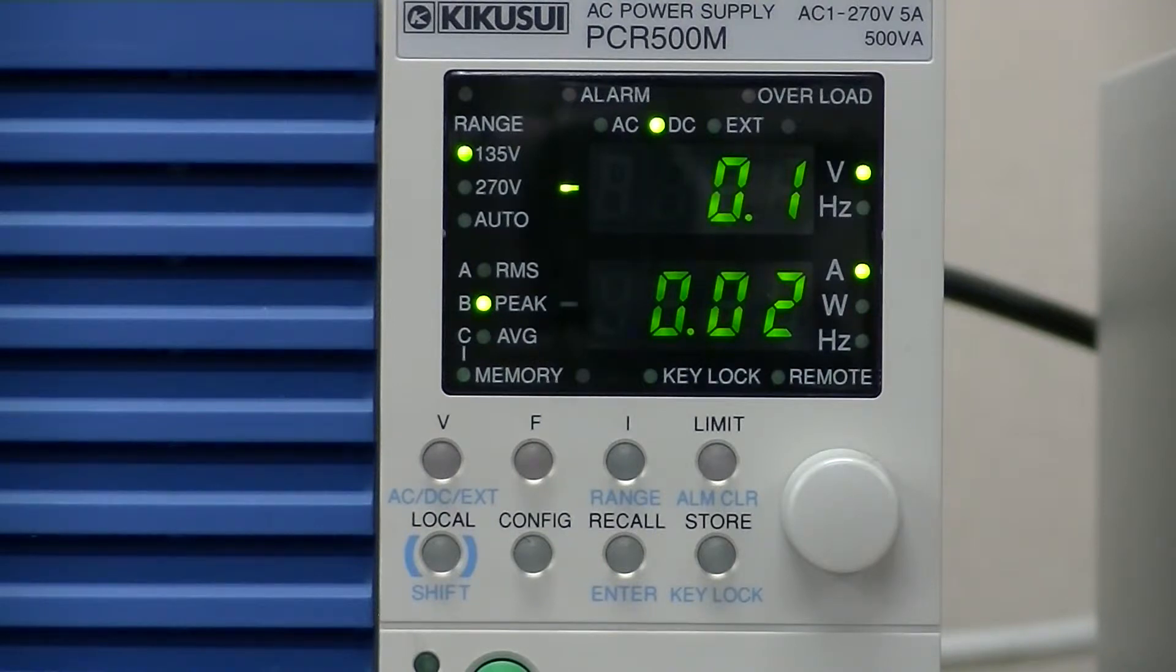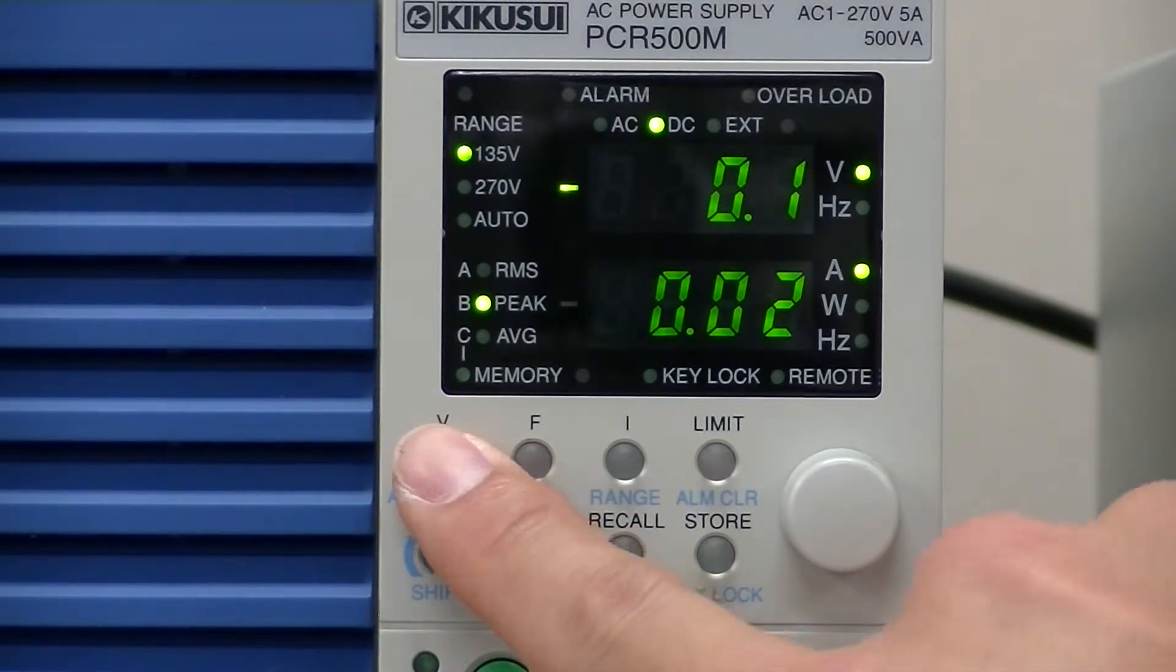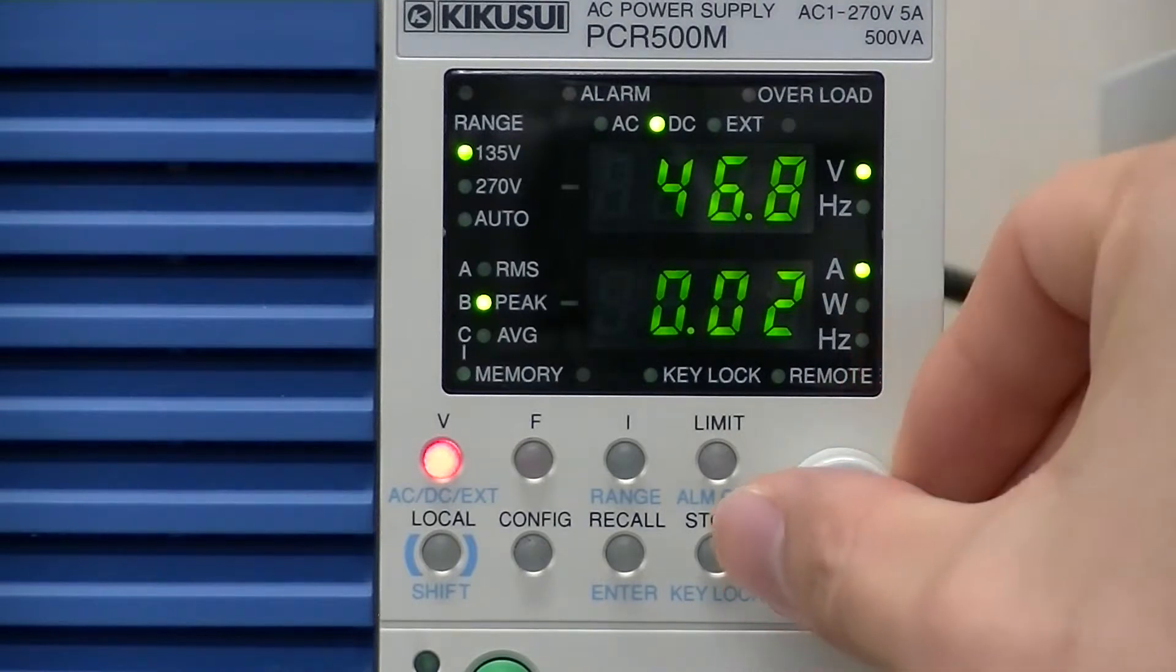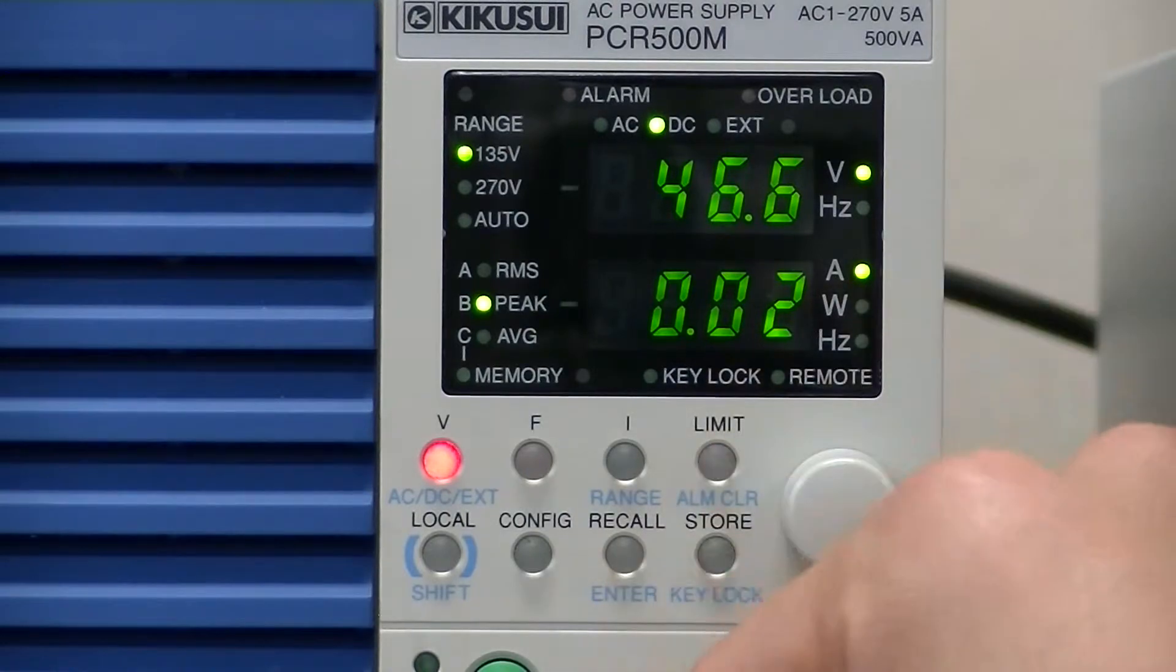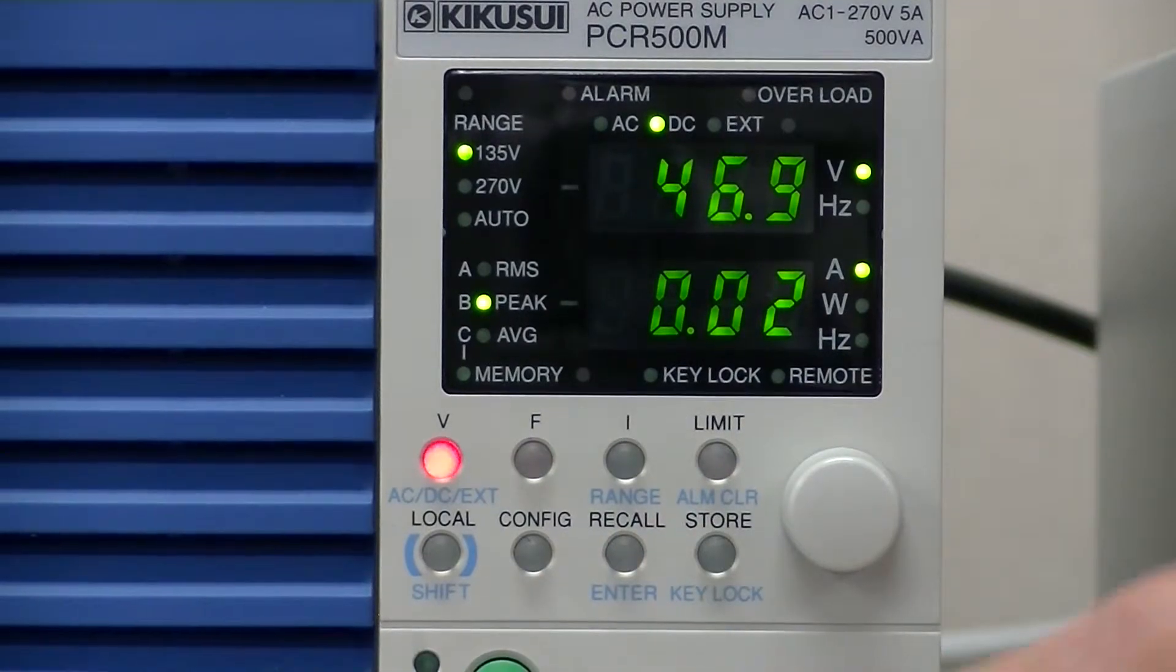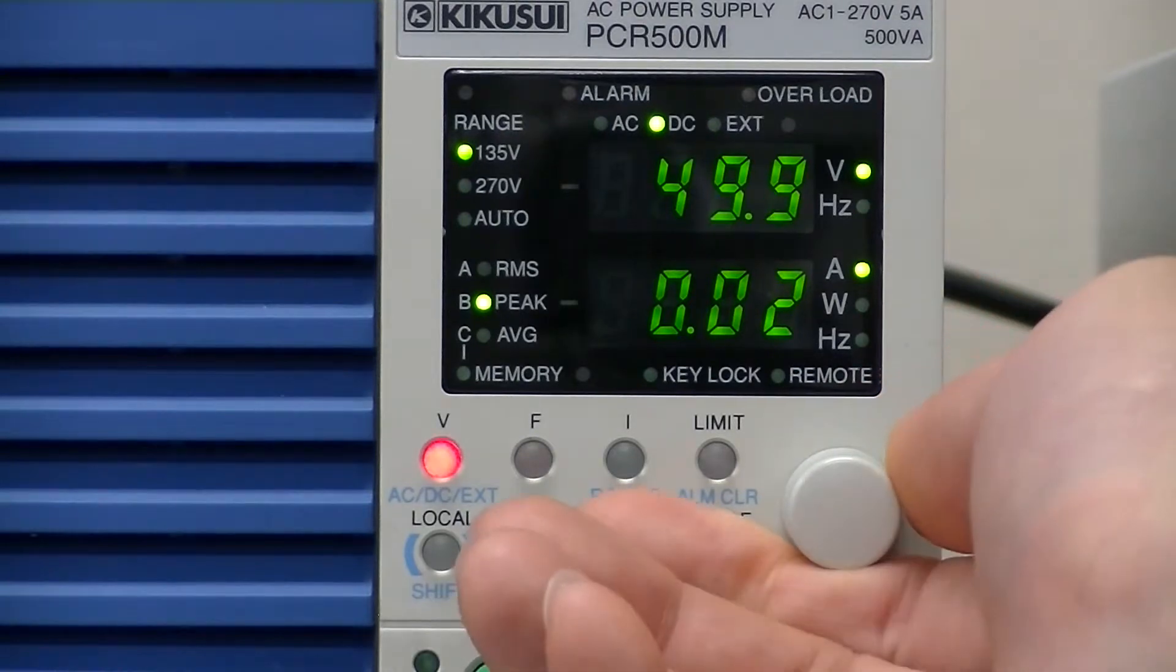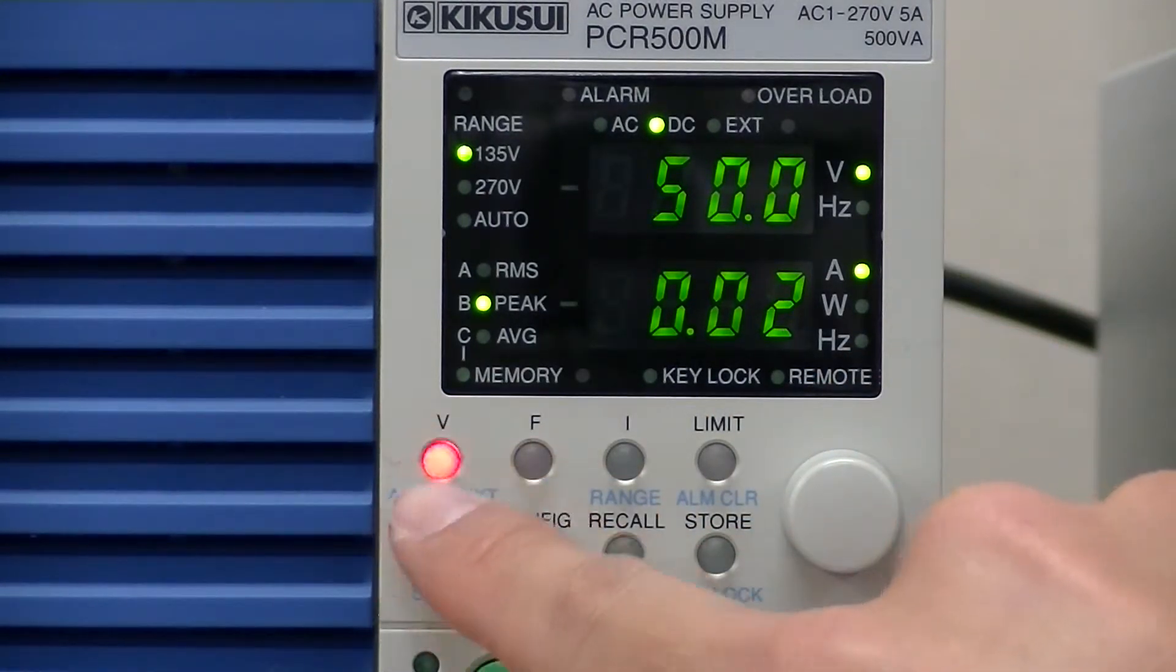Next, let's set the voltage. Voltage can be set easily by pressing the V key and turn right or left to adjust your desired voltage. When you finish, press the V key again.